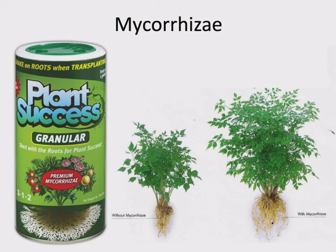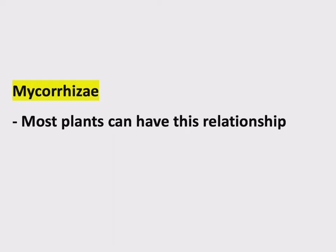Without mycorrhizae versus with mycorrhizae, the plant benefits — the plant grows faster, taller, and larger. There's even a little shaker bottle product to shake into your potting soil to ensure that this relationship establishes itself. This definitely benefits the plant and it benefits the fungus as well. Interestingly, this is extremely commonplace — about 90% of all vascular plant species can have this relationship. Most plants are capable of having this if they manage to come in contact with the right fungi.